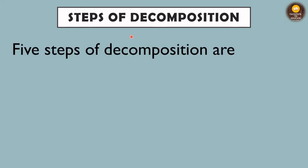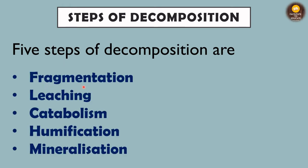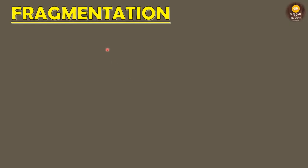Now we will see what are the steps involved in the decomposition process. There are five major steps: fragmentation, leaching, catabolism, humification, and mineralization. You need to remember all of the steps in order, because questions can be asked about which step comes after which.